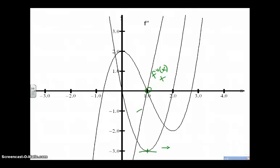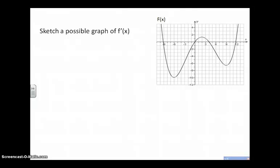Let's do another practice problem: sketch a possible graph of f prime of x, given f of x. f prime is going to have zeros at negative six, at two, and at nine. The outputs on the derivative function from negative infinity to negative six are negative; from negative six to positive two are positive; from two to nine are negative; and from nine to positive infinity are positive.